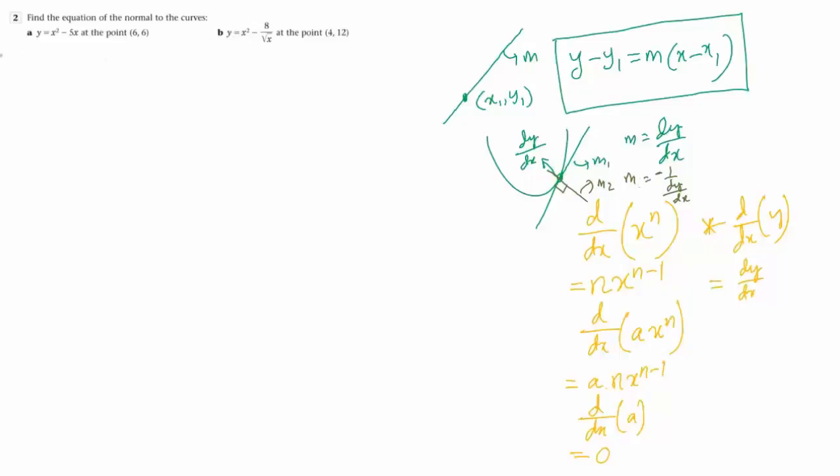So let's do this: y equals x squared minus 8 over square root of x. Now let's bring this square root of x, which means x to the power half in index form, upstairs as x squared minus 8x to the power minus half. That's the simplified format. We need to simplify things.